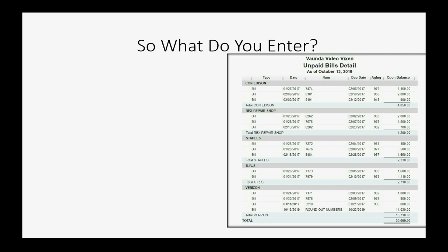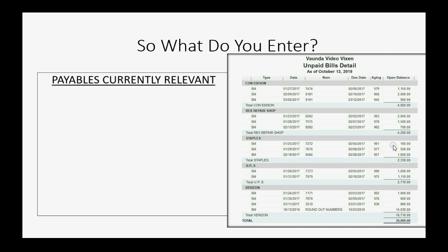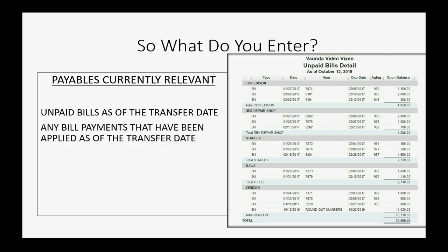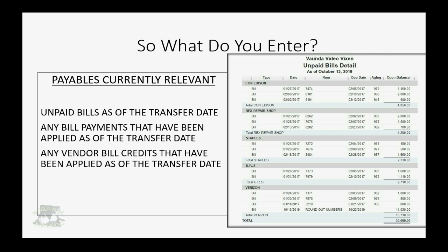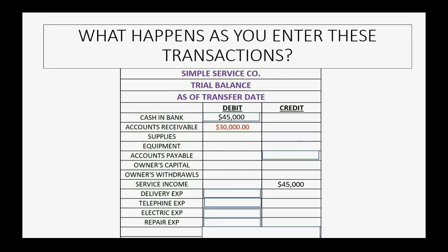The unpaid bills report is your target. When you finish entering vendor transactions to set up accounts payable, each individual bill's balance in the unpaid bills report must be the same as it was when you finished in the old system. To do that, you will enter the payables currently relevant transactions: any unpaid bills as of the transfer date, any bill payments applied to those bills as of the transfer date, and any vendor bill credits applied to the specific open bills as of the transfer date. That is what will get each individual bill's balance correct and give you the correct total in the trial balance for accounts payable.